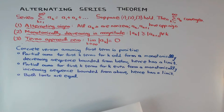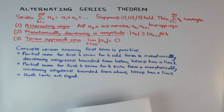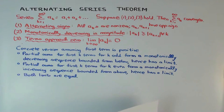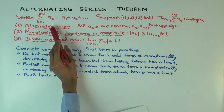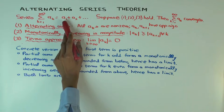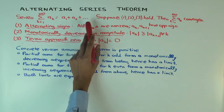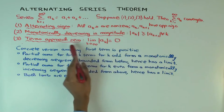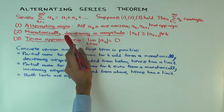This talk is going to be about some counterexamples to the alternating series theorem — not counterexamples to the theorem itself, but to show why each of its conditions is necessary. The alternating series theorem says that if you have a series where the terms are alternating in sign, the magnitudes are going down, and the terms approach zero, then the series converges.